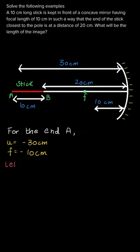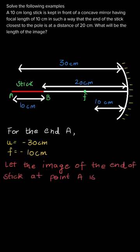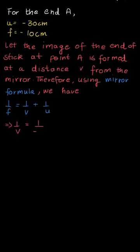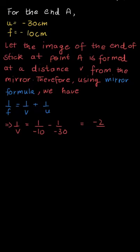The focal length is 10 cm, with the same negative sign because it is to the left of the mirror. Let us assume that the image is formed at point V — let the image of end A be formed at a distance V from the mirror. Therefore, using the mirror formula: 1/F = 1/V + 1/U. Rearranging, 1/V = 1/F − 1/U. Substituting the values, we get 1/V = −2/30, so V = −15 cm.